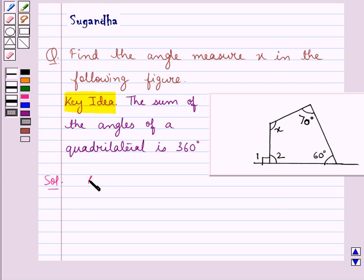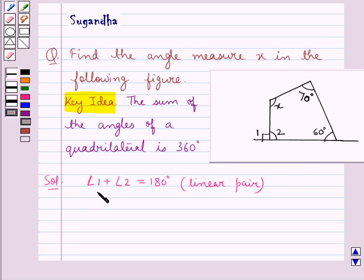So we can say angle 1 plus angle 2 is equal to 180 degrees because they form a linear pair. Now angle 1 is given to be 90 degrees. So we have 90 degrees plus angle 2 is equal to 180 degrees.